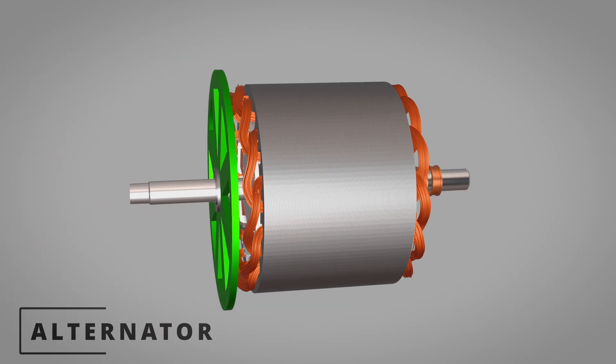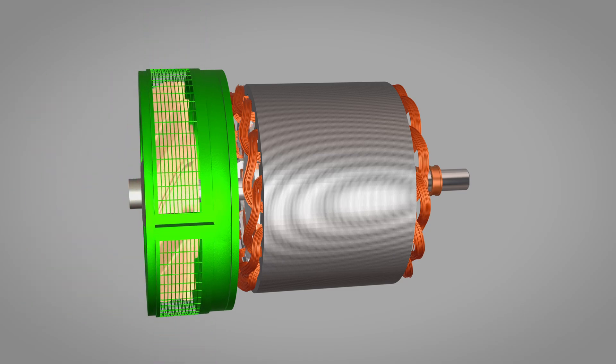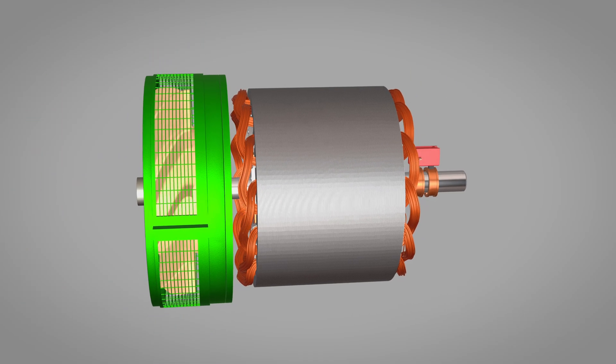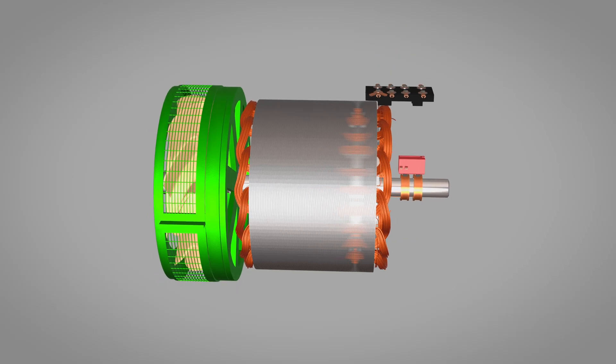We'll build the machine step-by-step and watch the physics come alive. Alternators are critical for converting mechanical energy into stable AC electricity, enabling everything from vehicle charging systems to standby generators that keep essential services running during outages.